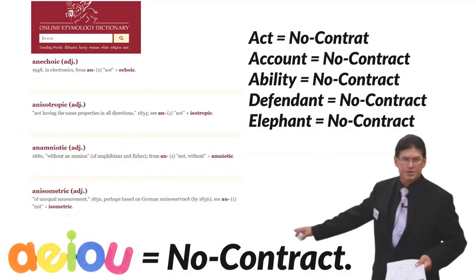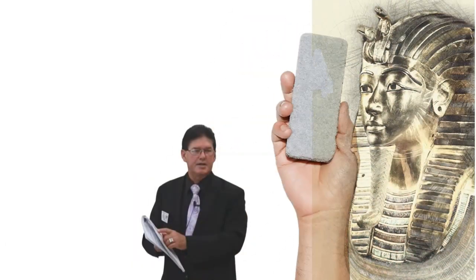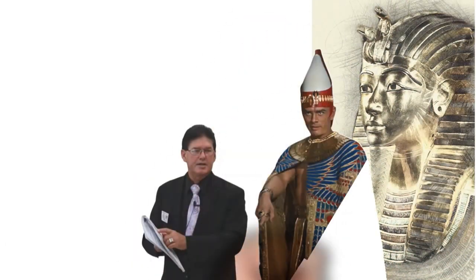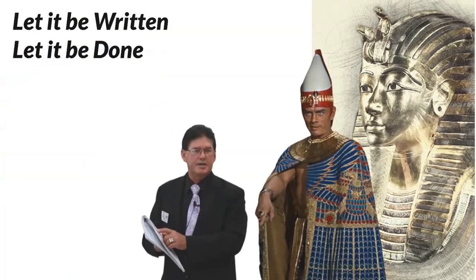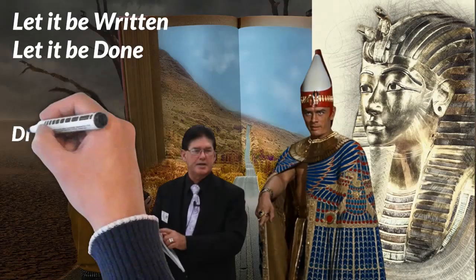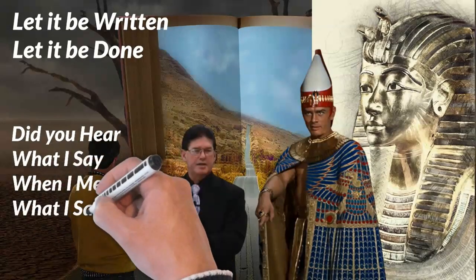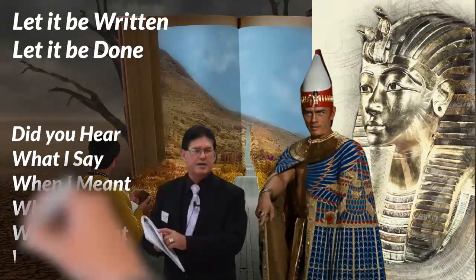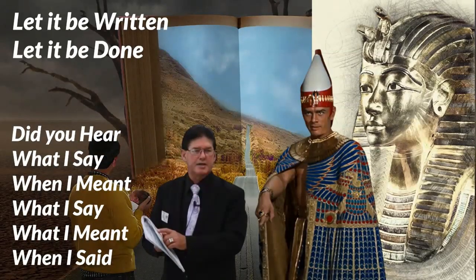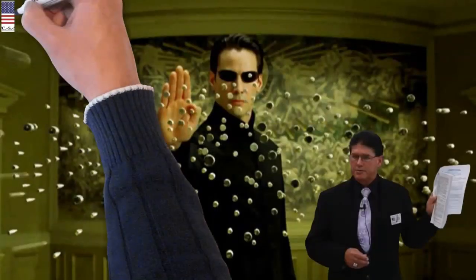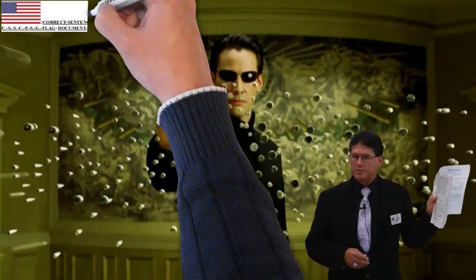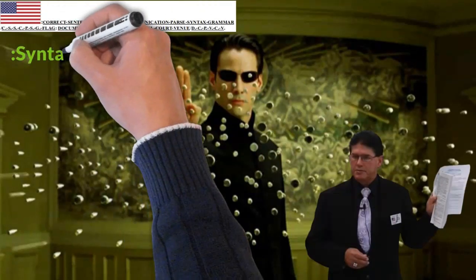ACT means no contract. In 4700 B.C., Pharaoh said, 'So it is written, so it shall be done.' There was a reason for that, because oral contracts cannot be seen or proven. If you don't see it written, you can't prove it.